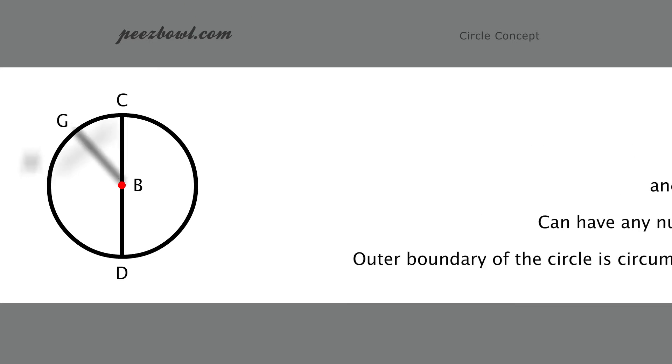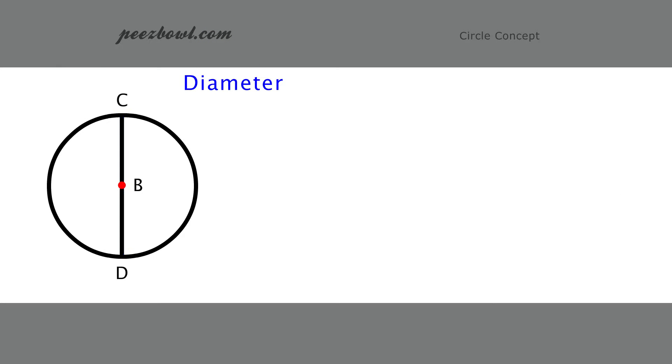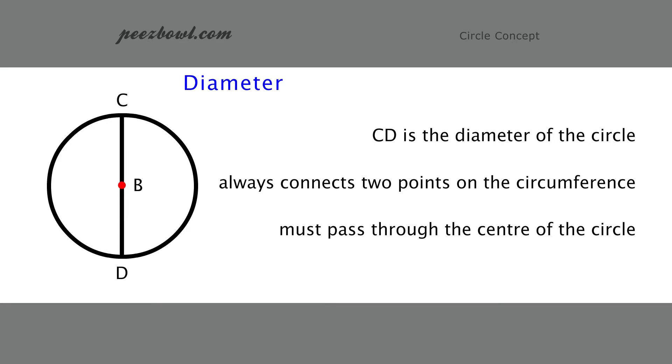Now, focus only on line CD. Length CD is called diameter of the circle. A diameter always connects two points on the circumference and passes through the center of the circle. As we can see here, the line CD is passing through the center B and connecting two points C and D on the circumference.